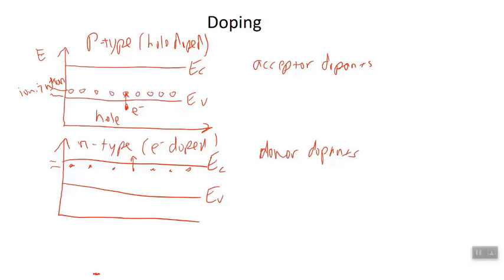The donor atoms become positive ions because they gave up an electron. The semiconductor is still electrically neutral because you have all these positive donor ions balanced by carriers of the opposite charge — just as many. For every atom that becomes ionized, you have an electron in the conduction band, and so they cancel. An important assumption we make is that at room temperature there is 100% ionization — all atoms doped in are ionized. If I put 1,000 atoms in my semiconductor, I have 1,000 electrons in the conduction band or 1,000 holes in the valence band.